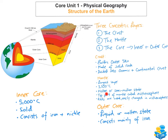The mantle is the largest layer, making up about 80% of the Earth's volume. Temperatures here reach up to 3,500 degrees Celsius and the rock is in a molten or semi-molten state. The top part is known as the asthenosphere — a very weak zone where rocks are easily changed and flow, which explains why the plates are able to move due to convection currents within the mantle.